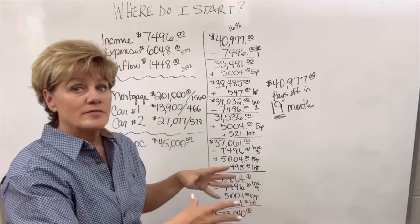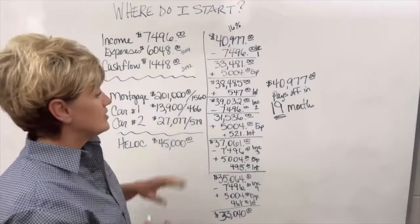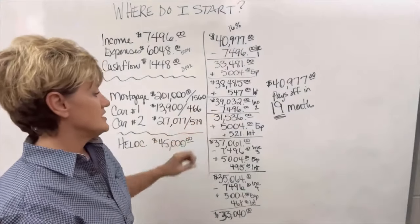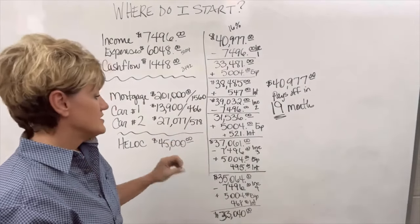We use the income to keep the balances down, which keeps the interest charges down as well. In month two, she'll do the same thing. Income in, expenses and interest out. Month three, same thing. Income in, expenses and interest out.